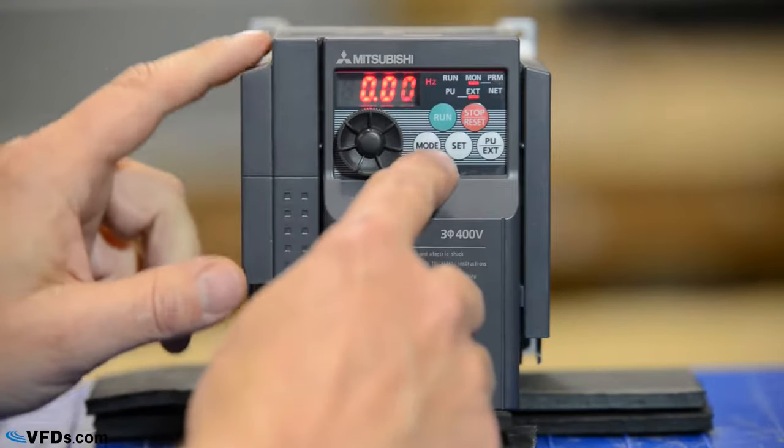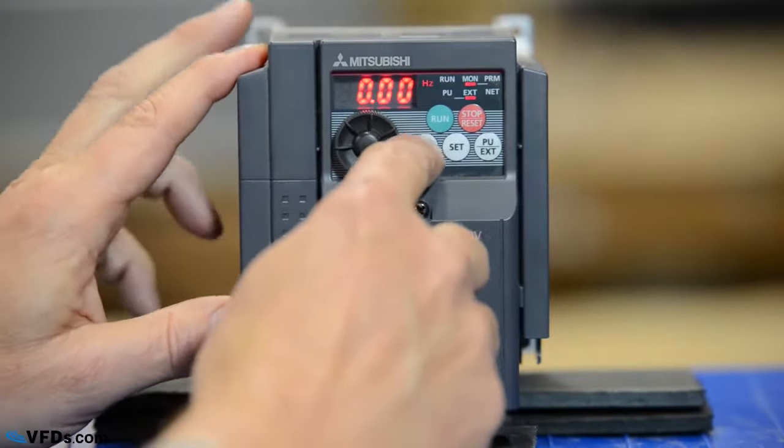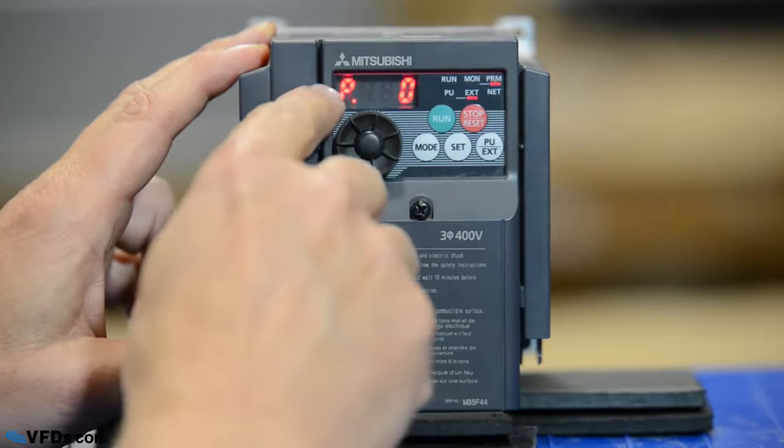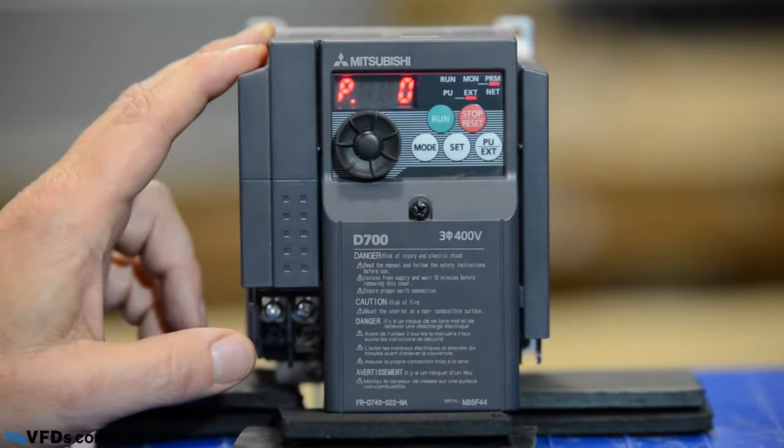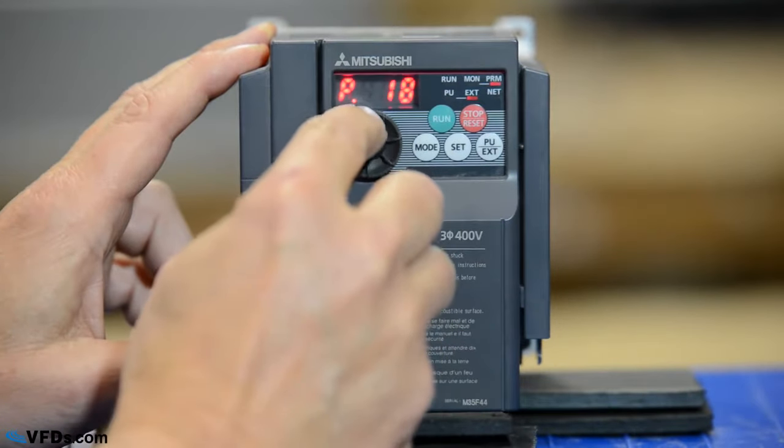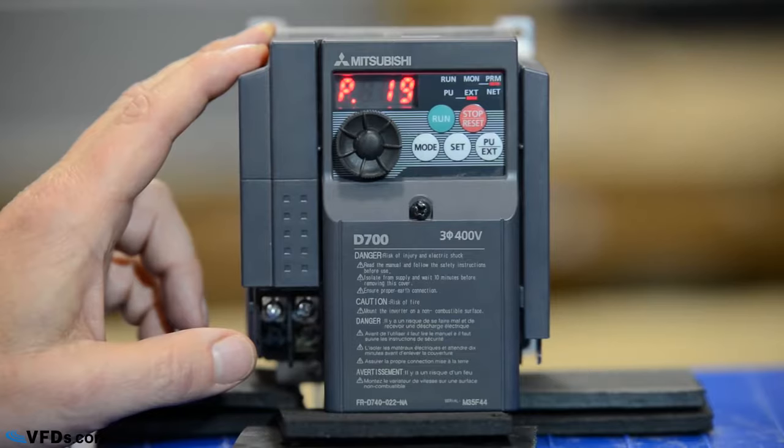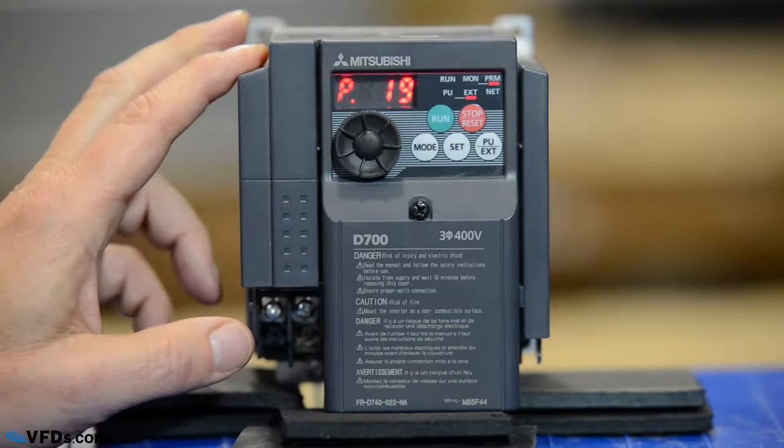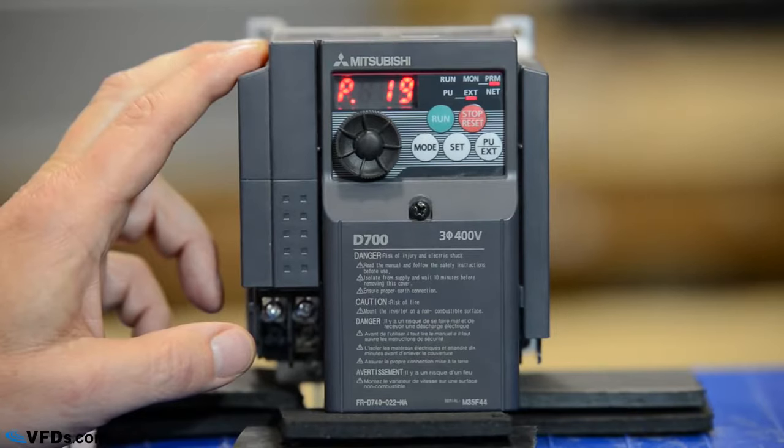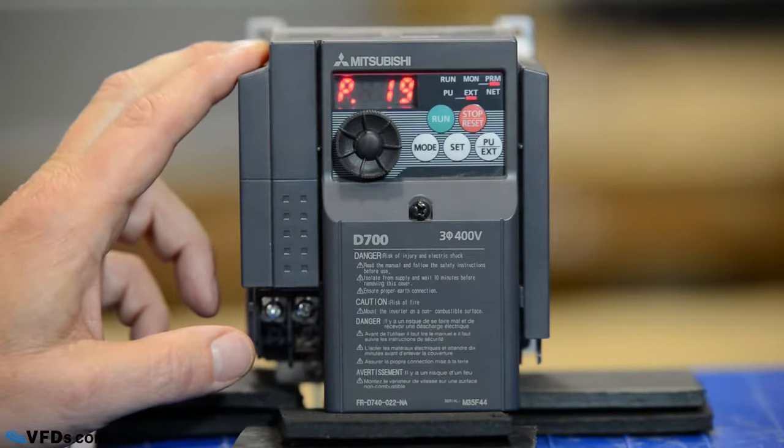We'll first start by pushing the mode button. When we get to the mode button, the first thing we see is P, which stands for parameter. We're going to go to parameter 19 by simply turning the wheel. The first thing I like to program on any drive is the volts and the frequency. These need to match the motor nameplate.